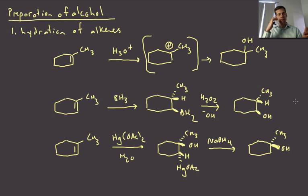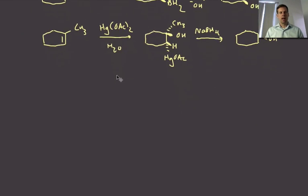And so in this case, the overall addition of the water is Markovnikov. So hydroboration, anti-Markovnikov; oxy-mercuration reduction, Markovnikov. So that's how to add simply water across the alkene. And the other process that you will have learned is the dihydroxylation of alkenes.